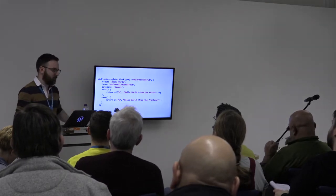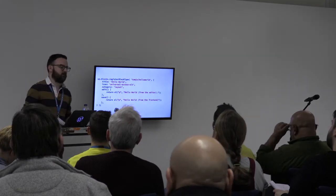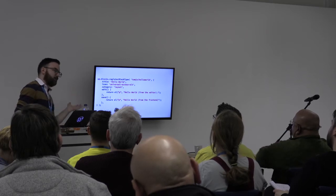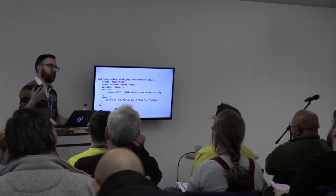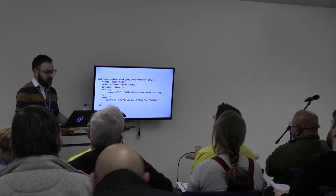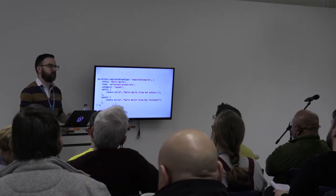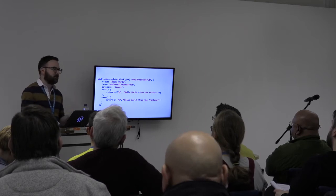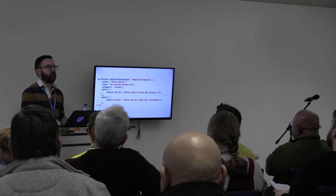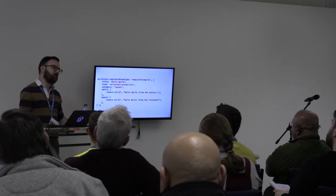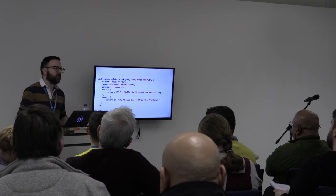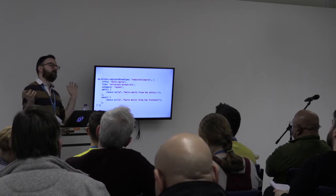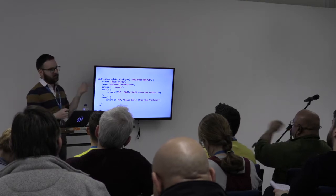We're looking at blocks. There's a wp.blocks bit, and it has a function that lets you register different kinds of blocks. The first parameter is basically the internal name. If you register a custom post type or taxonomy, it will have the fancy human name and then the internal name — like 'post' lowercase versus 'Post' with a capital P, or translated into French or German.